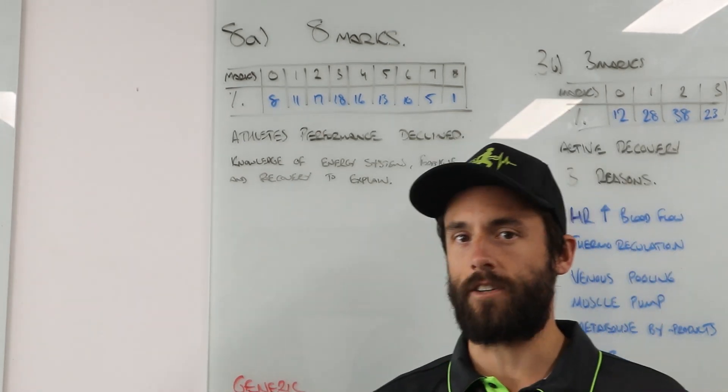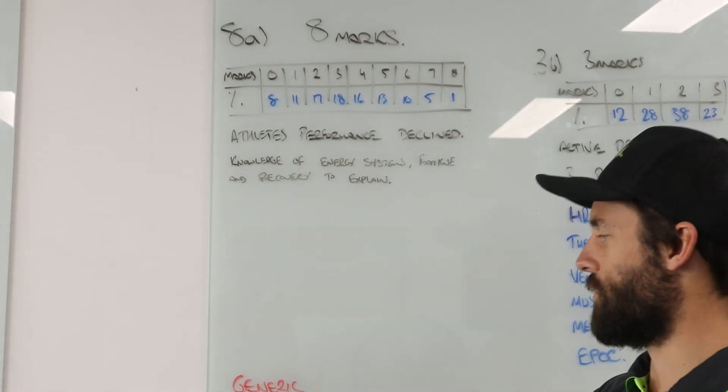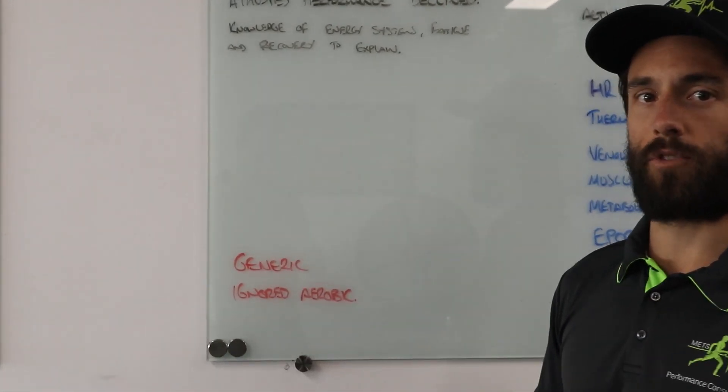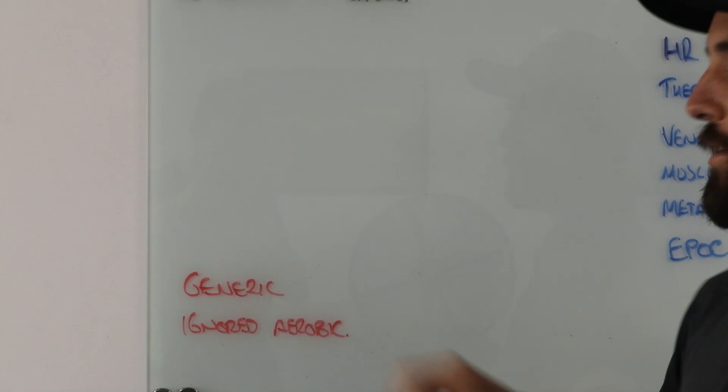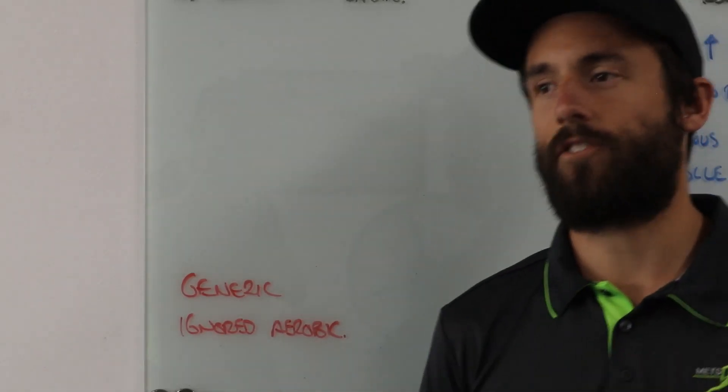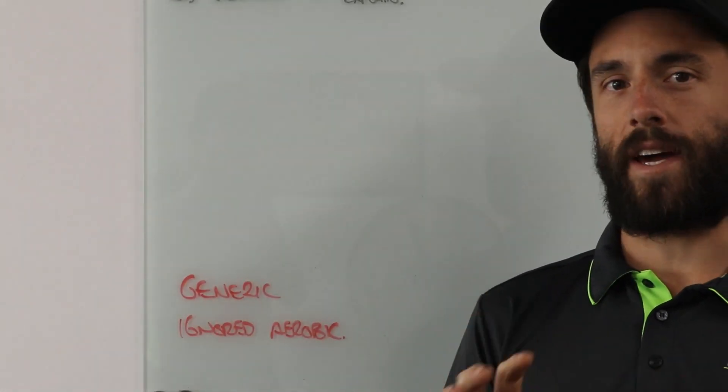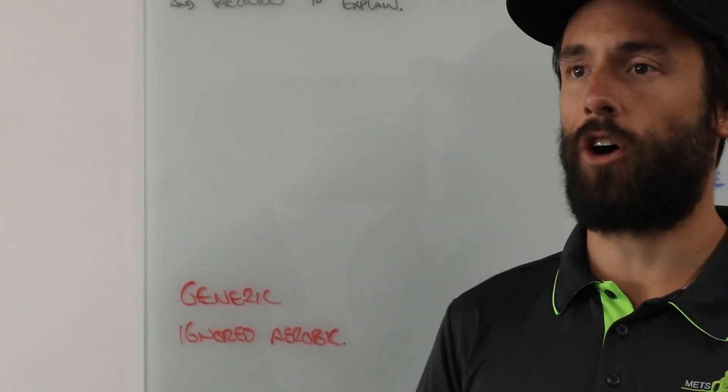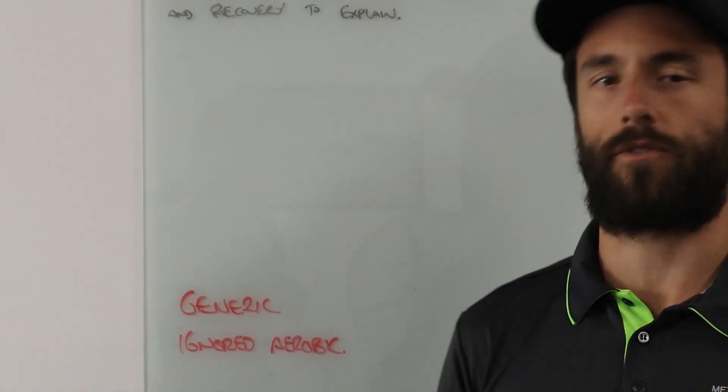Now the question said the athlete's performance declined as we spoke about, it they got worse over the eight sprints. Use your knowledge of energy systems, fatigue, and recovery to explain why.